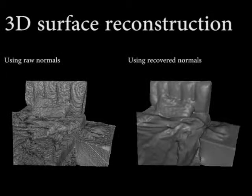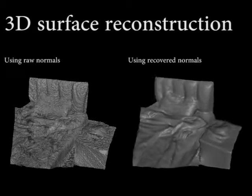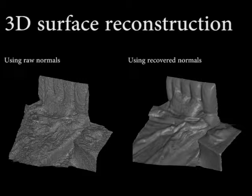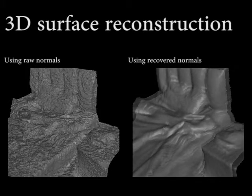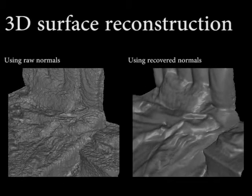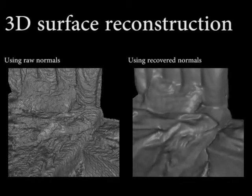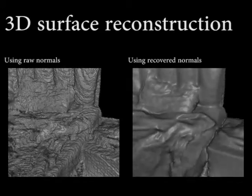Finally, we show the 3D surface reconstructed by our normals. This is the bedroom example. On the left, we show the reconstructed surface using raw normals from the Kinect. On the right, we show the reconstructed surface using our recovered normals. The surface on the left is bumpy due to noise. The surface on the right is of higher quality.